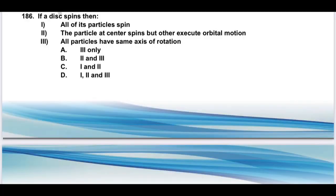Question 186: if a disk spins, the particle at center spins about its own axis and particles at outer edges execute orbital motion. All particles have the same axis of rotation. The correct answer is 2 and 3 — option B.